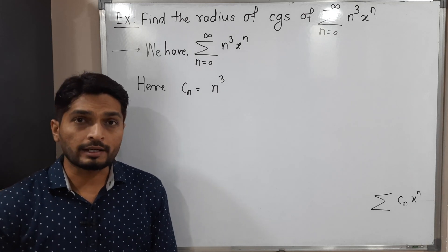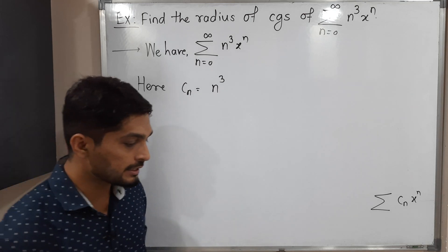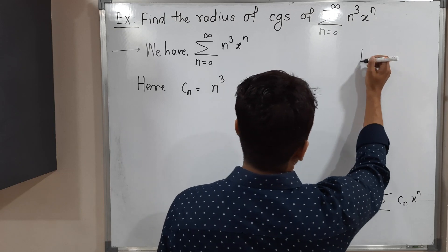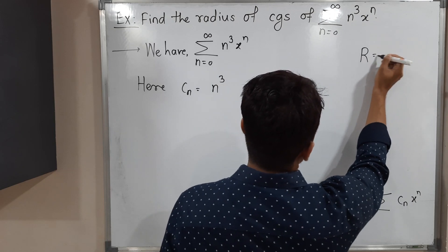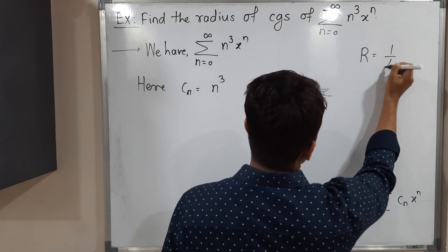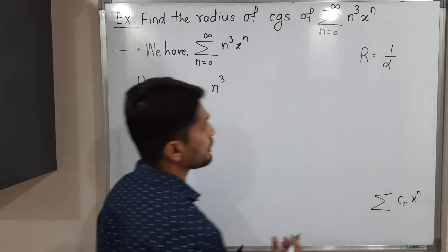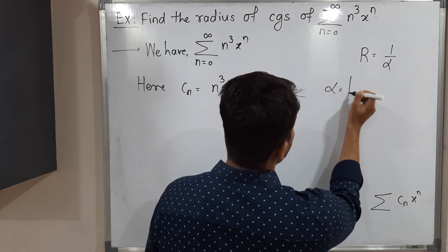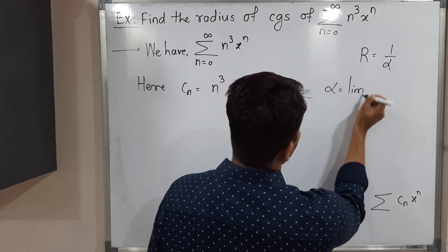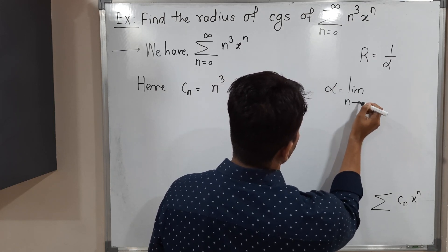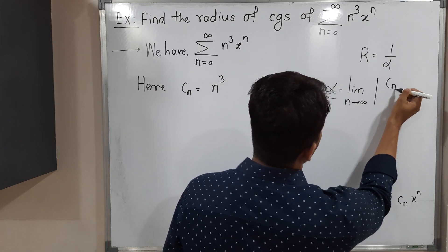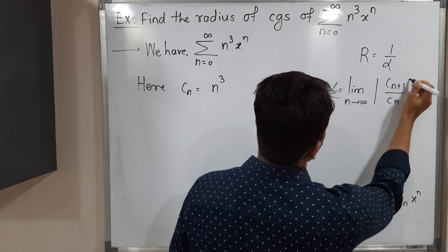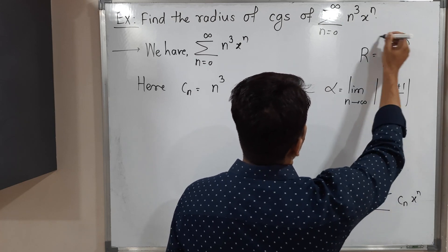We have to find the radius of convergence. The formula is: the radius of convergence R equals 1 over alpha, where alpha is the limit as n tends to infinity of the modulus of c_{n+1} divided by cₙ. This is the formula we will use.